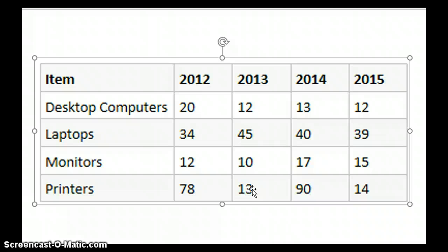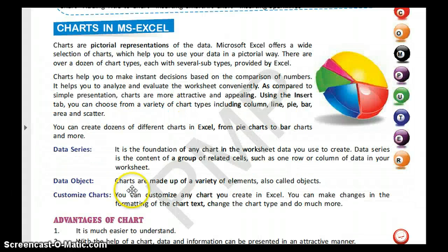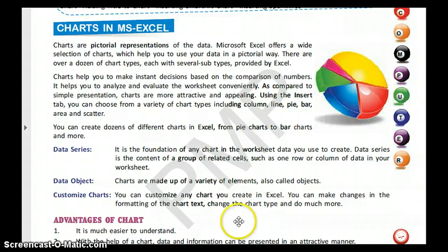Next is data objects. Charts are made up of various elements, and all these different elements of a chart are called data objects. Next is customized charts — you can customize any chart you create in Excel using different formatting options like color change, font change, design, and pattern. You can change everything and customize your charts.